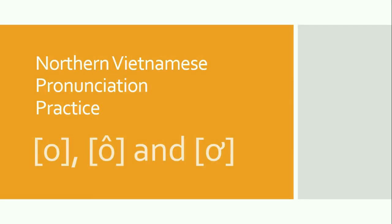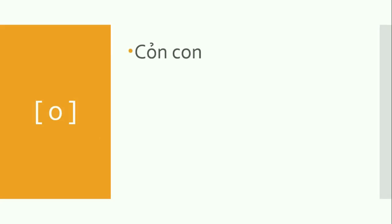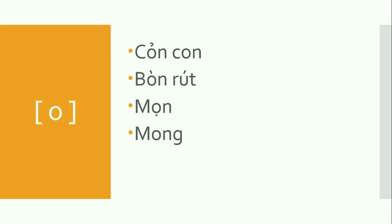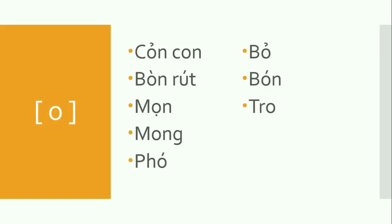Vietnamese pronunciation practice distinguishing between O, Ô, and Ơ. Some examples with the first one — O — we have: còn, con, bòn rút, mọn, mong, phó, bỏ, bón, cho, hòn, hong.